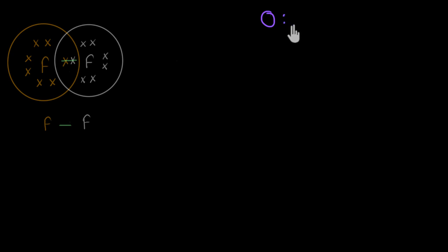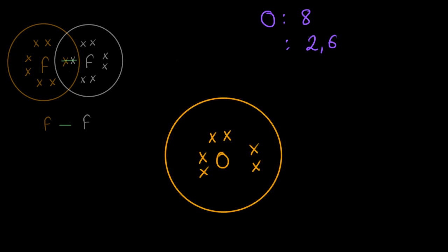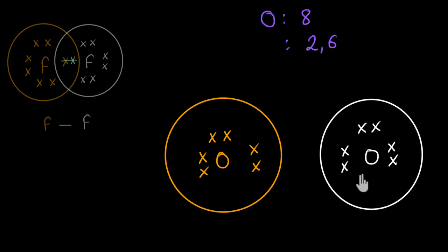Now let's look at a couple more examples. This time, let's talk about oxygen. Oxygen has eight electrons going around it, and its electronic configuration is 2,6 - meaning there are six electrons in the outermost shell. Its octet is not complete, meaning it is not stable. Can you pause the video and try to figure out how many electrons will be shared between two oxygen atoms so that both have a complete octet?